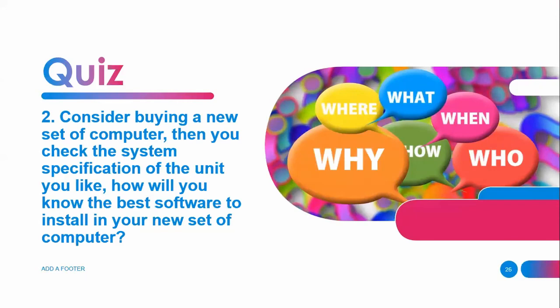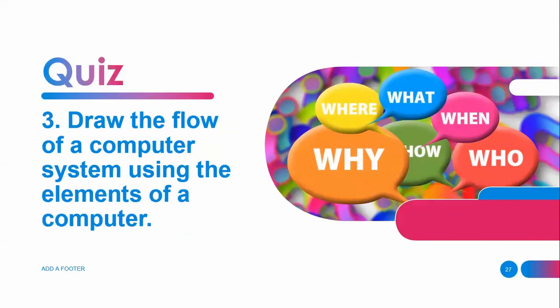Consider buying a new set of computers, then you check the system specification of the unit you like — how will you know the best software to install in your new set of computer? Under number 3, draw the flow of the computer system using the elements of a computer.